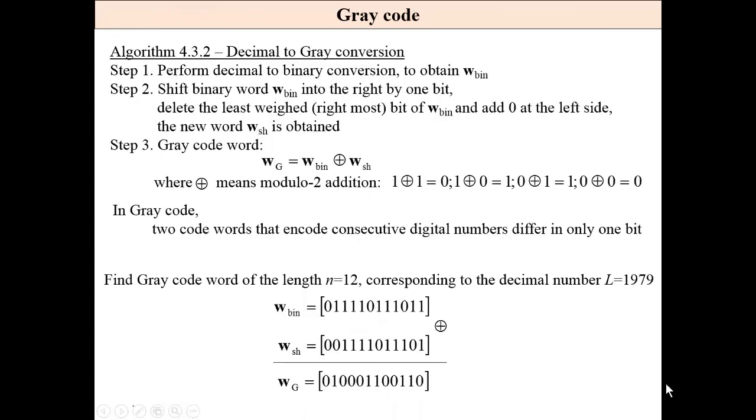Now grey code. Grey code is the code where two code words that encode consecutive decimal numbers differ in only one bit.